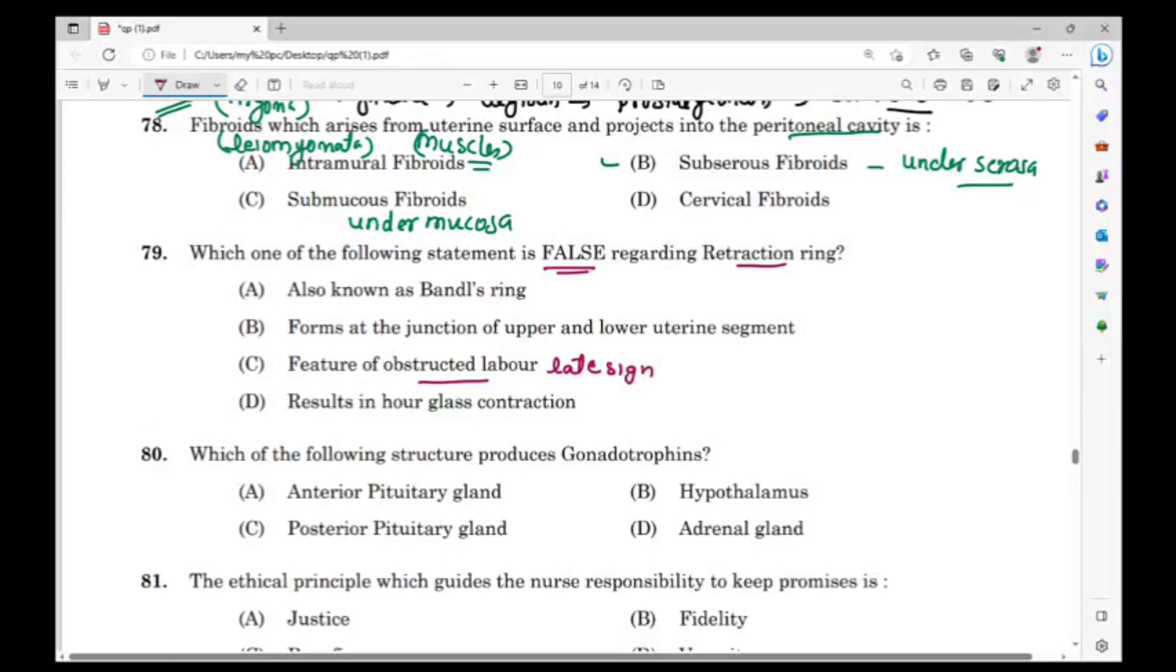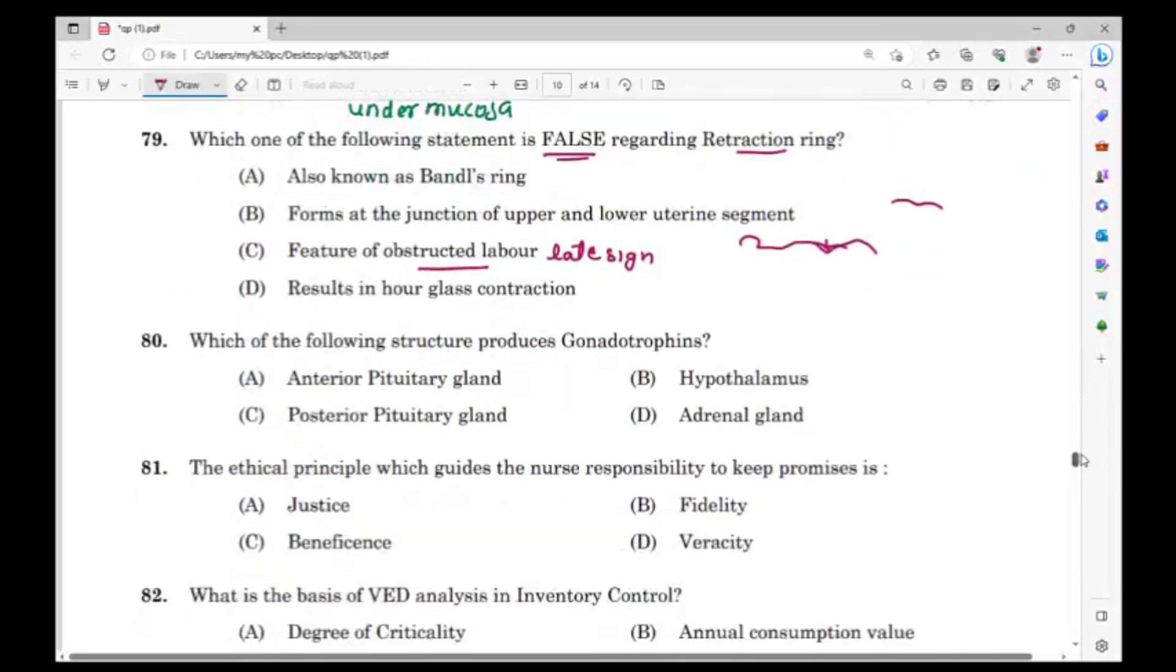There is an abnormal junction between two segments of the uterus. That is a Bandle's ring, pathological retraction ring. That is an abnormal junction between two segments of the uterus.